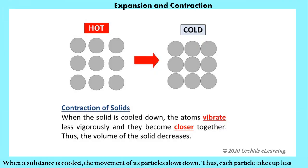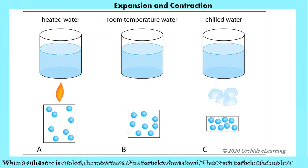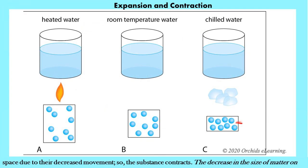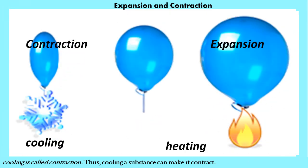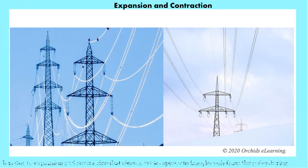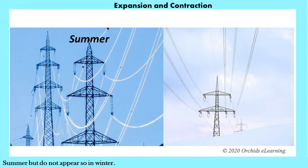When a substance is cooled, the movement of its particles slows down, and each particle takes up less space, so the substance contracts. The decrease in the size of matter on cooling is called contraction. It is due to expansion and contraction that electric cables appear to hang loosely from the poles during summer but do not appear so in winter.